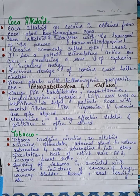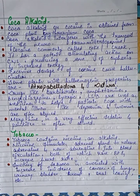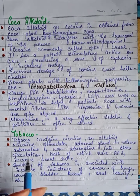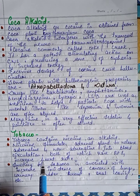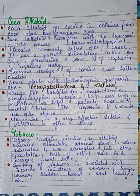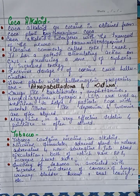Tobacco contains nicotine, which is an alkaloid. Nicotine stimulates the adrenal gland to release adrenaline and noradrenaline into blood circulation, both of which raise blood pressure and increase heart rate.